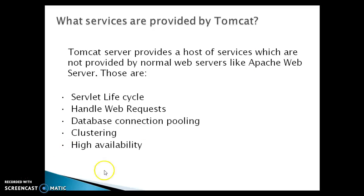The next service is high availability. A high availability feature has been added to facilitate the scheduling of system upgrades without affecting the live environment. It is done by dispatching live traffic requests to a temporary server on a different port while the main server is upgraded on the main port. It is very useful in handling user requests on high traffic web applications. That's all about the services provided by Tomcat.